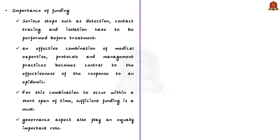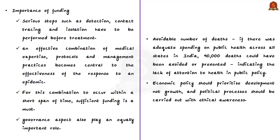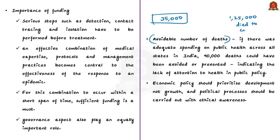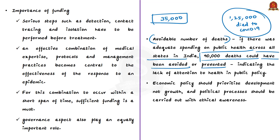The authors show how a number of deaths could have been avoided. They selected a state with a median level of public health expenditure and applied the death rate of that state to the national population. By this, they arrived at the number of COVID-19 deaths for the entire country. If all states had the spending level of that selected state, the number of COVID-19 deaths till November 7 would have been 35,000. But in reality, 1.25 lakh Indians had died due to COVID-19 by that date. The authors conclude that adequate spending on public health across all states could have prevented around 90,000 deaths.